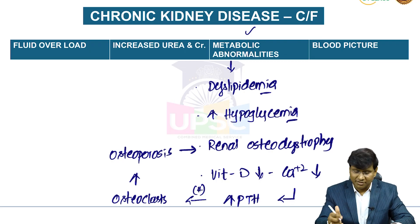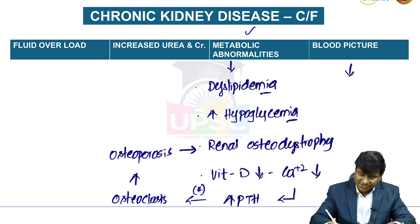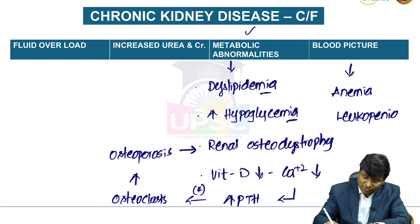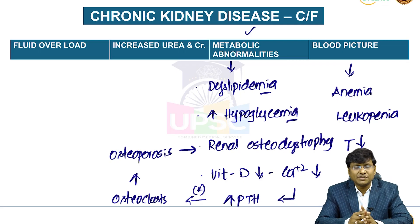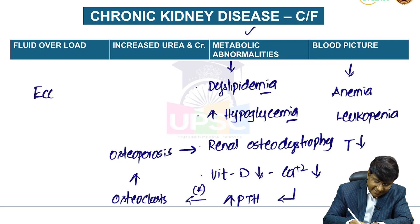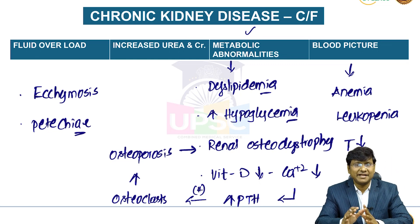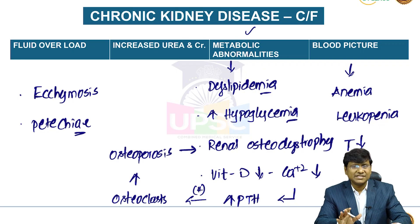In the blood picture, these patients have anemia and also leukopenia, putting them at increased risk of infections. They also have thrombocytopenia, leading to increased bleeding tendency including ecchymosis and petechiae. These are the blood picture and skin manifestations in patients with chronic kidney disease.